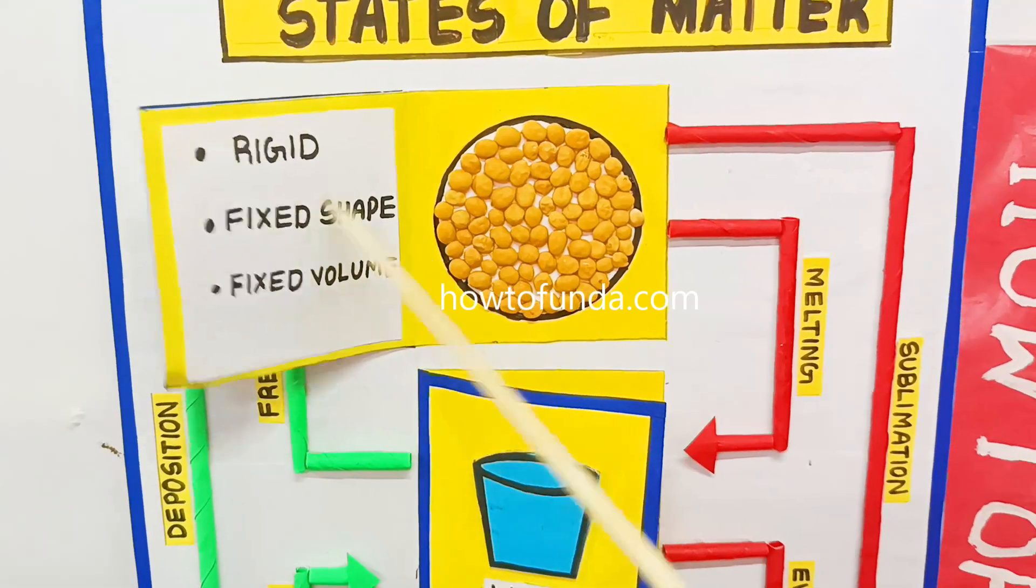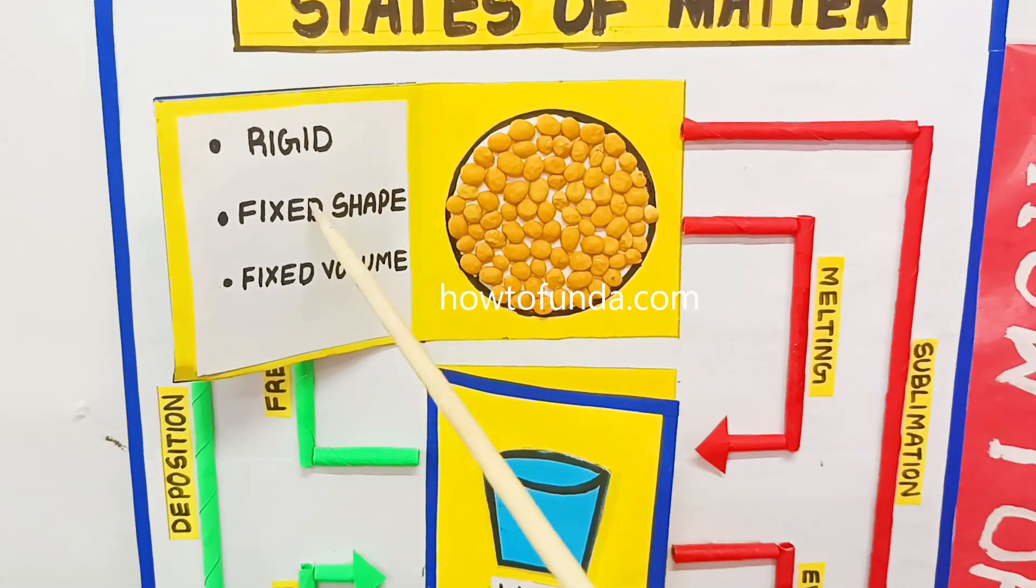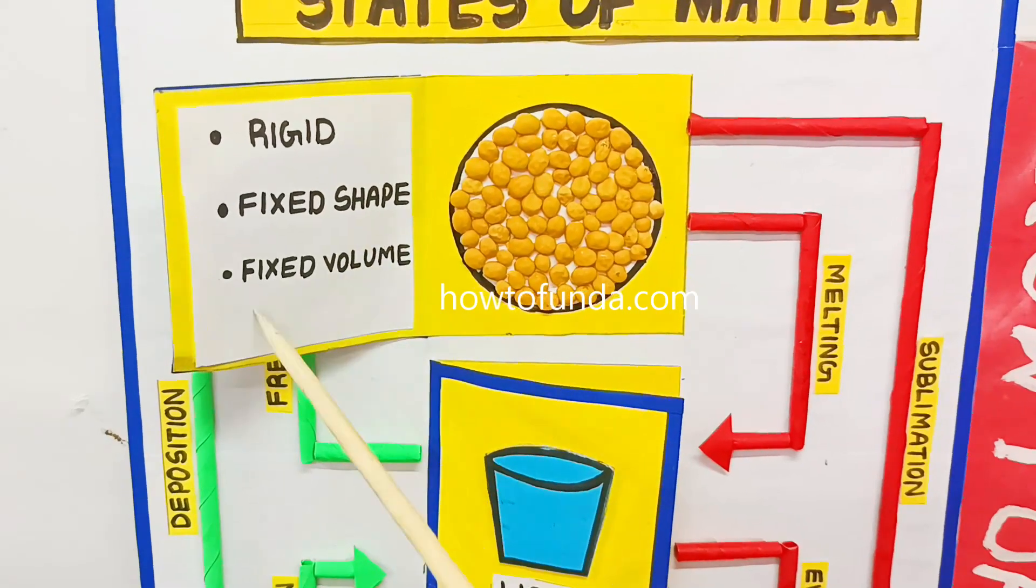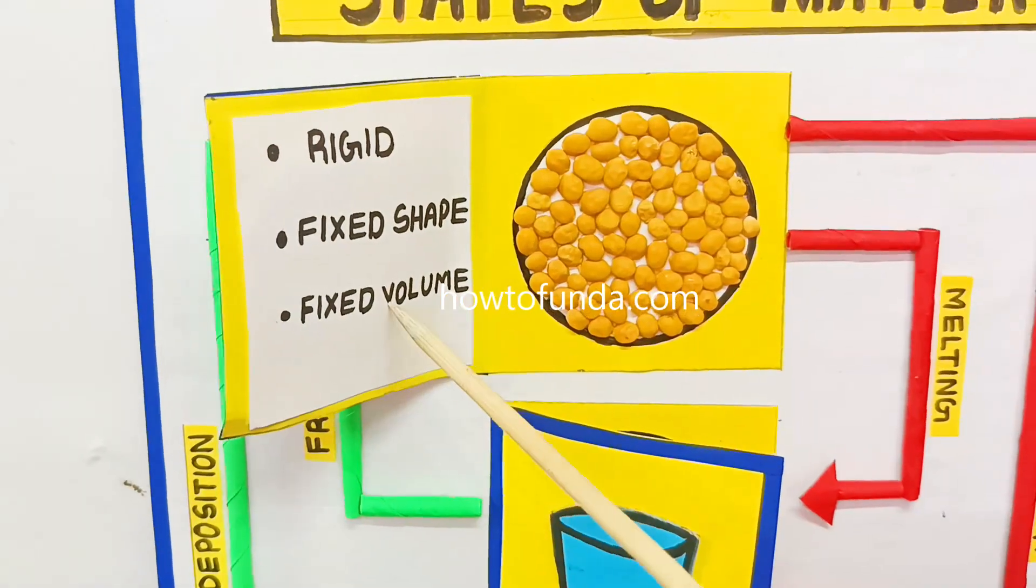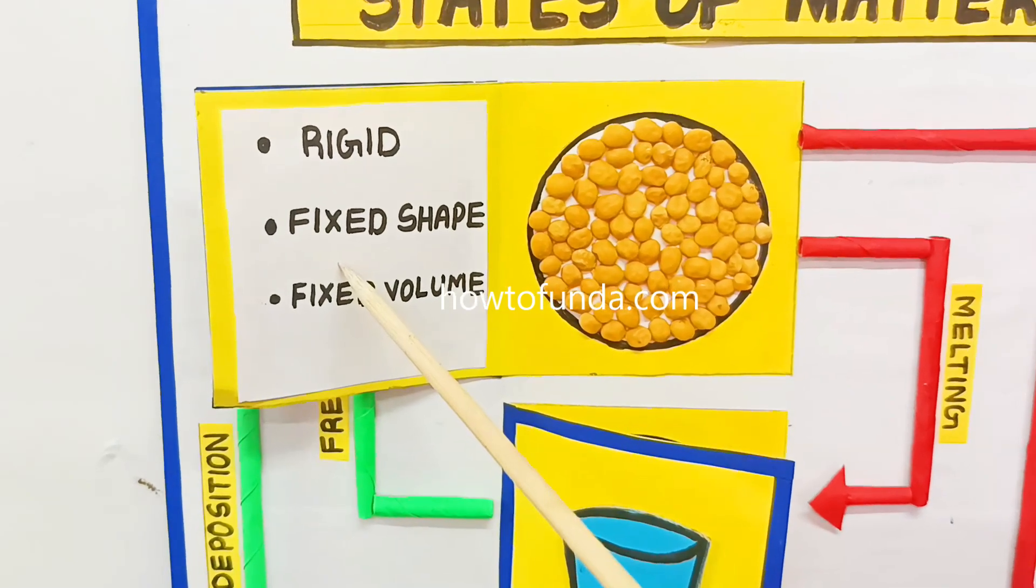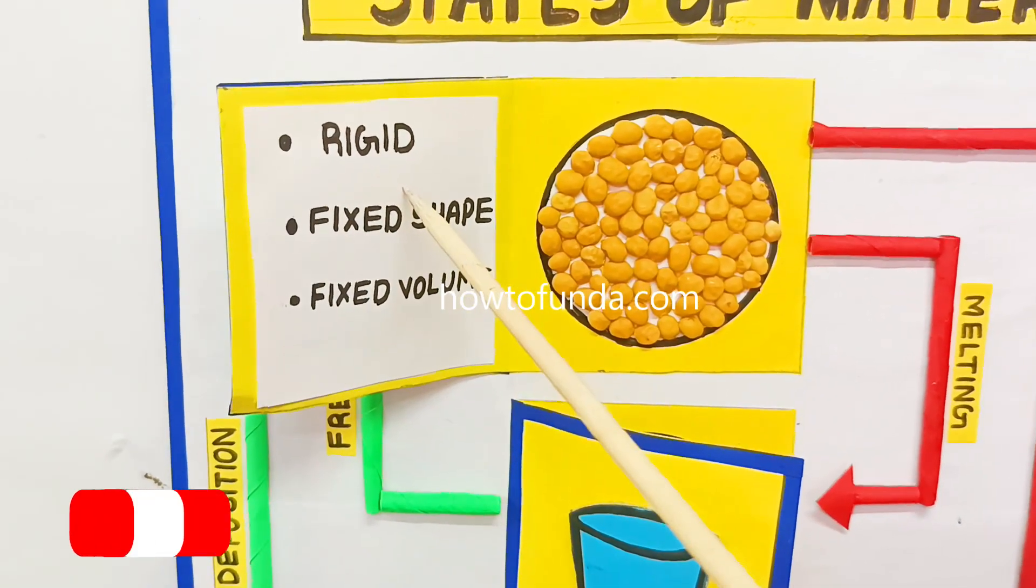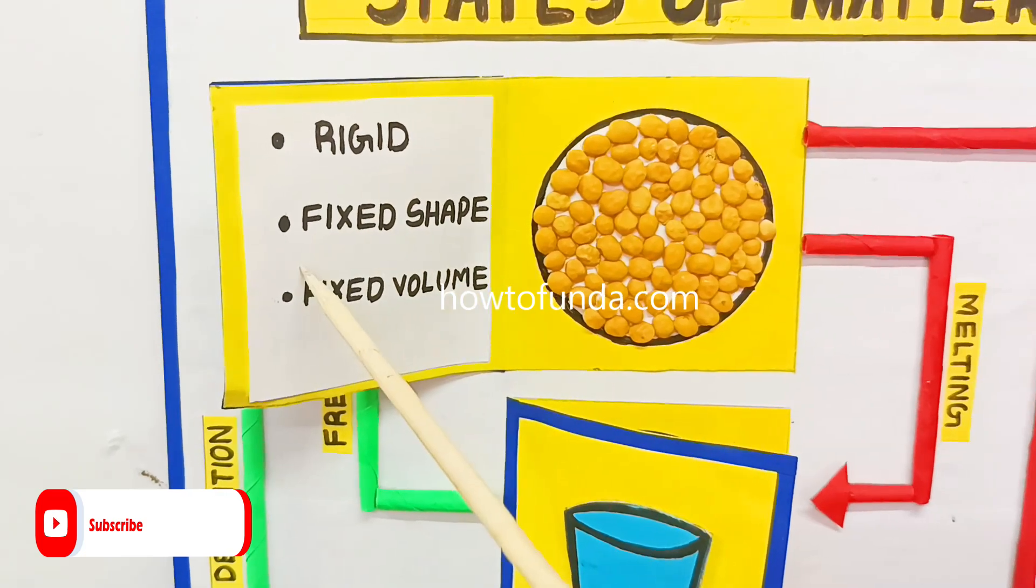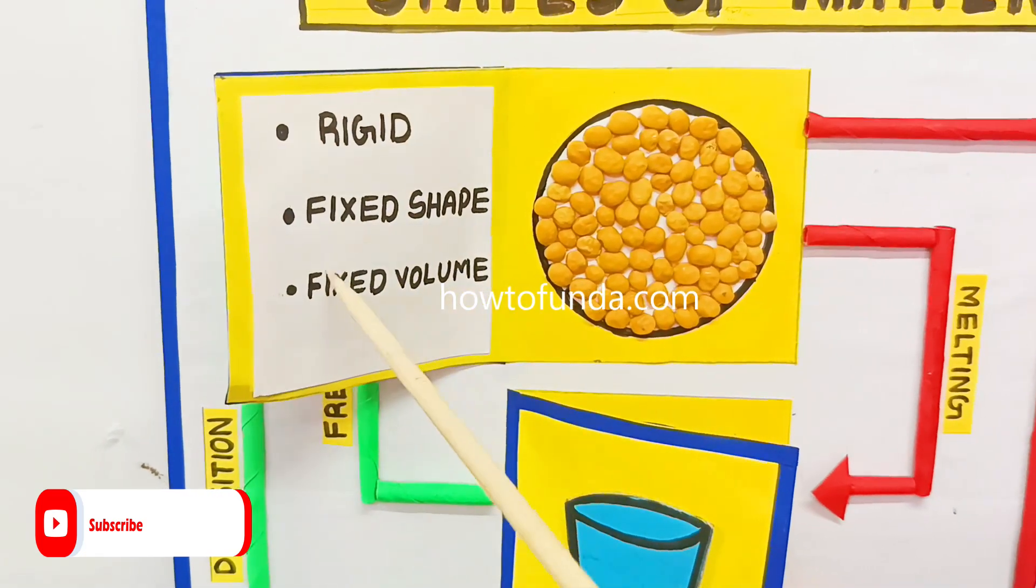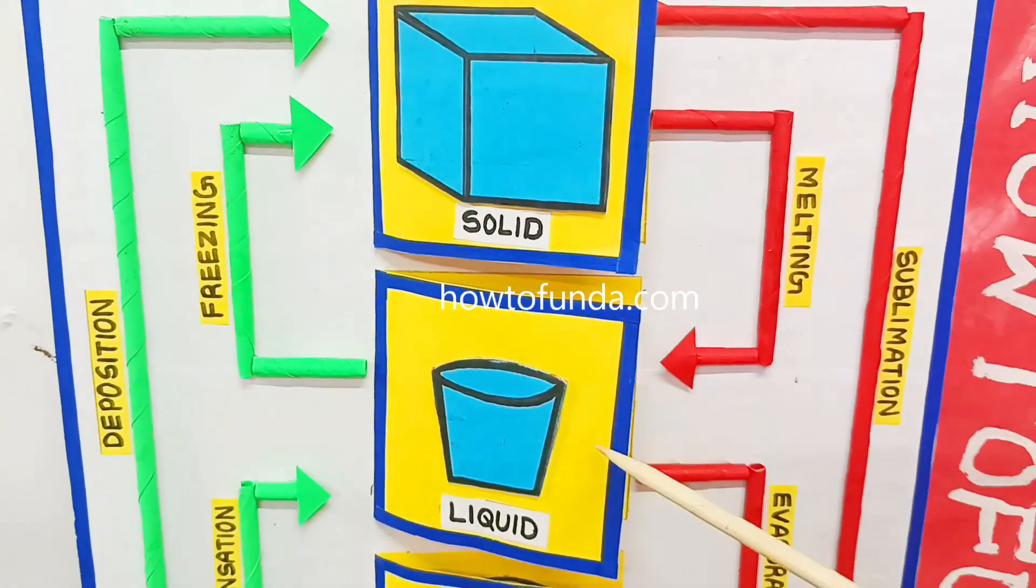The solid state matters are very rigid in nature and have fixed shape as well as fixed volume. If we take an example for solid item, it's an ice cube. The ice cube has these properties - it's very rigid and it has a fixed shape as well as fixed volume.